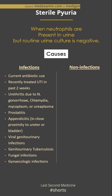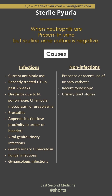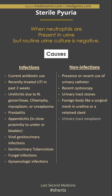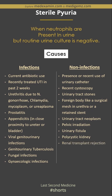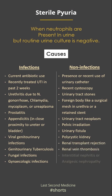Causes leading to sterile pyuria other than infections include presence or recent use of a urinary catheter, recent cystoscopy, urinary tract stones, foreign bodies, urinary tract neoplasm, pelvic irradiation, urinary fistula, polycystic kidney disease, renal transplant rejection, renal vein thrombosis, interstitial nephritis, and papillary necrosis.